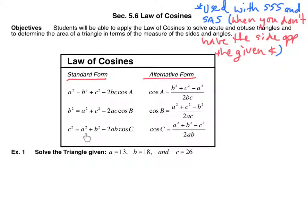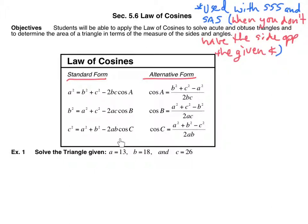You already know Pythagorean Theorem. The standard forms are used when we're finding side lengths, and the alternative forms are used when we're finding angle measures — they're just derived from the standard formulas. If I had to memorize three formulas, those would be the three, and then I would just solve for the cosine of A, B, or C if needed.